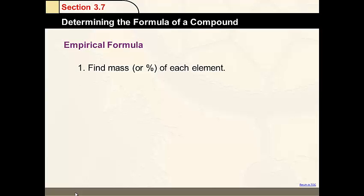Here are the steps to find an empirical formula. First, you'd want to find either the mass or the percentage of each element. Convert to moles. For each element, you do this individually for each one.